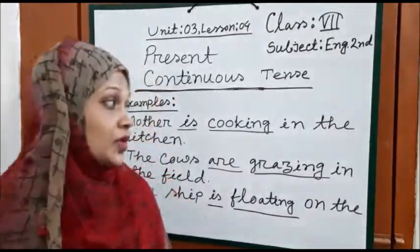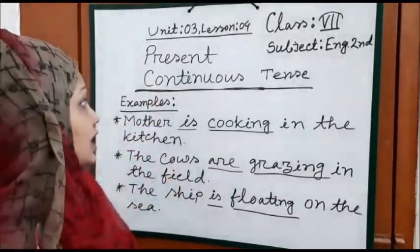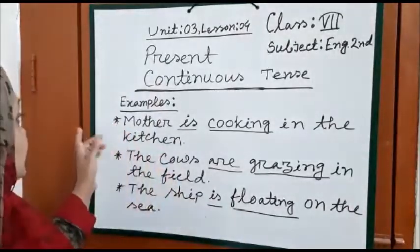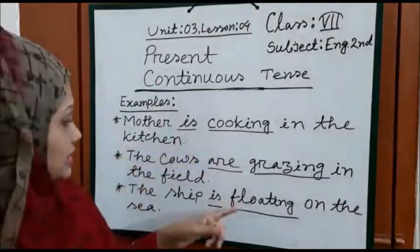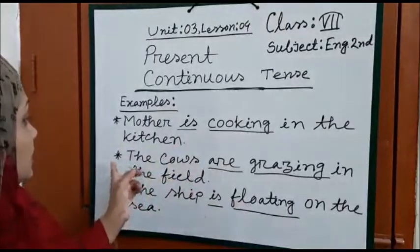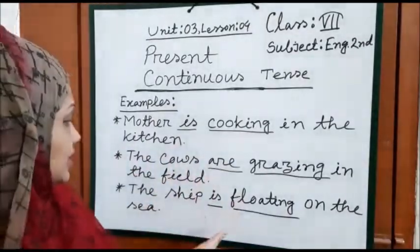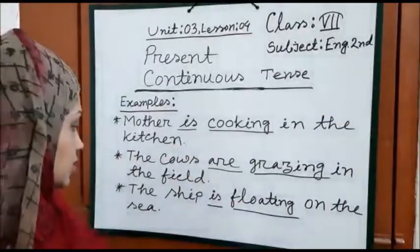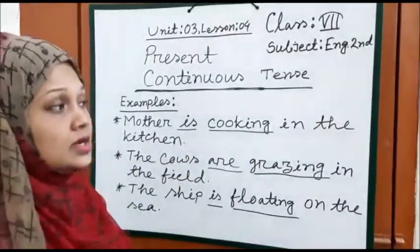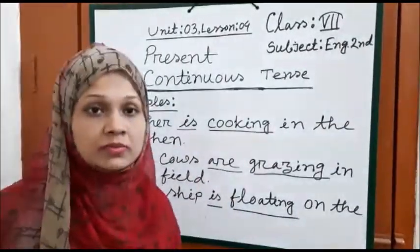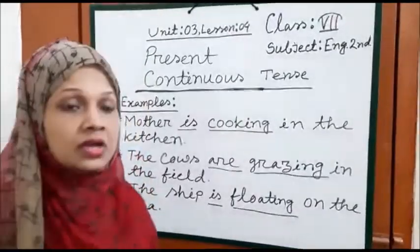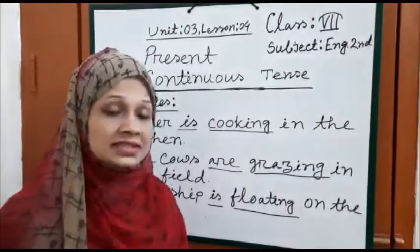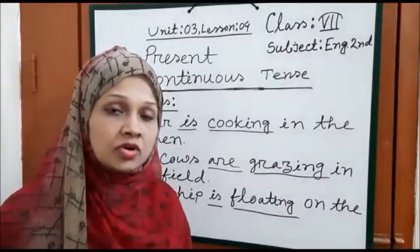At first I am going to show you some examples: Mother is cooking in the kitchen. The cows are grazing in the field. The ship is floating on the sea. I hope, my dear students, you have understood what we are going to learn, and these are examples of present continuous tense.